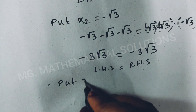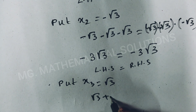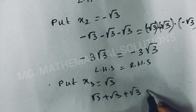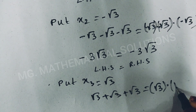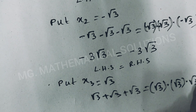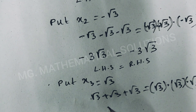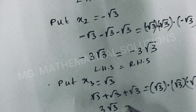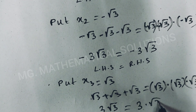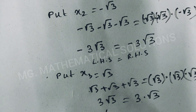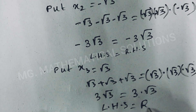Put x₃ equals root 3. So root 3 plus root 3 plus root 3 equals root 3 times root 3 times root 3. That gives 3 root 3 on the left, and root 3 times root 3 times root 3 equals 3 root 3 on the right. Left hand side equals right hand side.